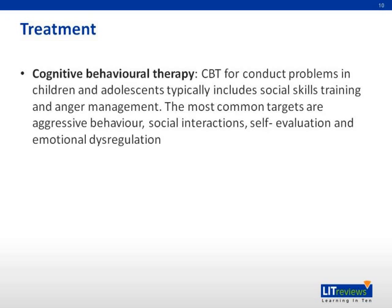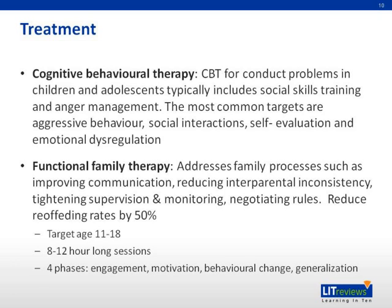Psychological treatments available for individuals with ODD or CD include cognitive behavior therapy. For conduct problems in children and adolescents, this typically includes social skills training and anger management. The most common targets are aggressive behavior, social interactions, self-evaluation, and emotional dysregulation. Functional family therapy is used to address family processes such as improving communication, reducing inter-parental inconsistency, tightening supervision and monitoring, and negotiating rules. This method reduced re-offending rates by 50%.